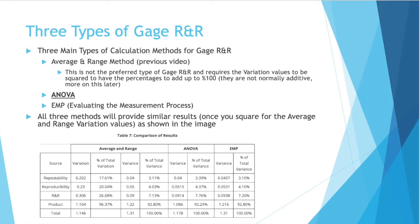There are three types of gauge R&R. The first is known as the average and range method, which I used in my previous gauge R&R video. It's not really the preferred type and requires the variation values to be squared to have the percentages add up to 100%, as they are not normally additive. The average and range method is the simplest to calculate. In this video, I'll be focusing on the next type: ANOVA, analysis of variance method.